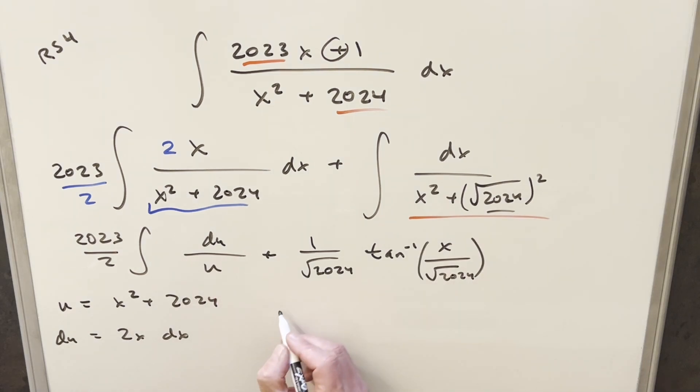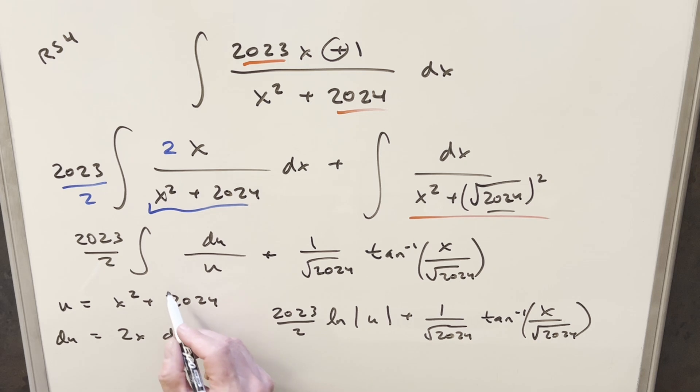Now coming back and integrating this one, we're going to have 2023 over 2 in front. This is just going to be natural log, absolute value of u, and then plus all this stuff. But now all you do is just back substitute in order to finish this off.